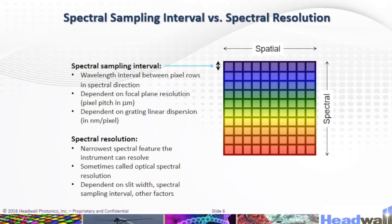Here we have the spectral sampling interval (SSI) versus spectral resolution. The SSI parameter is related to geometric spacing, dispersion, and other factors. Optical spectral resolution is usually broader than SSI. For example, with a 20-micrometer slit and 6.5-micrometer pixel pitch, the slit equals approximately 3 pixels. The spectral resolution is therefore approximately 3 times the SSI, plus a little more due to other optical factors.